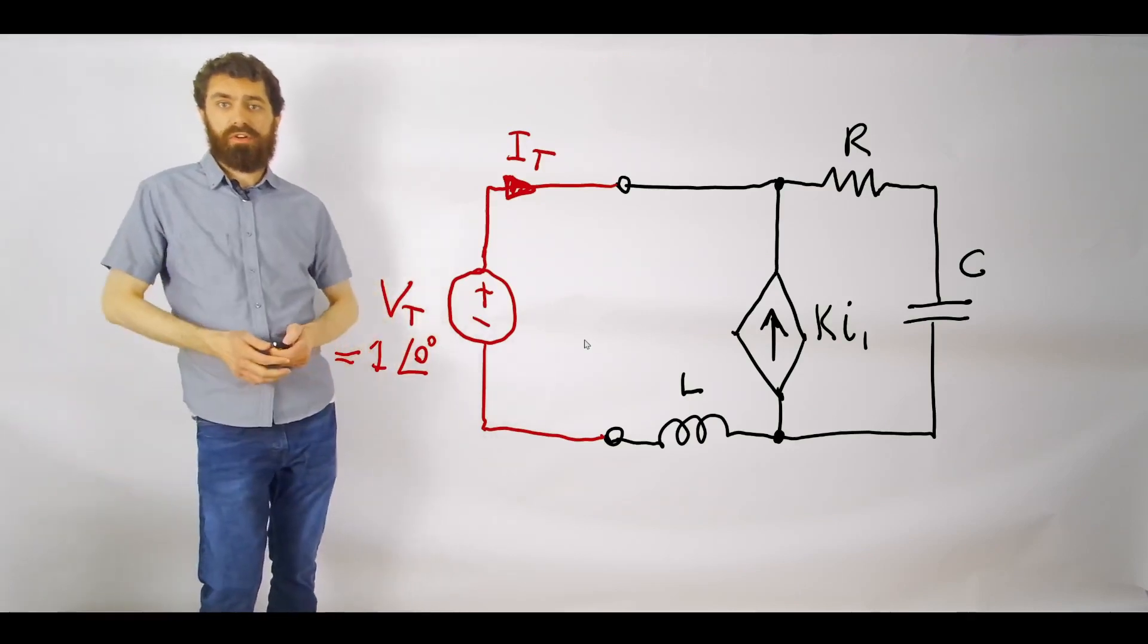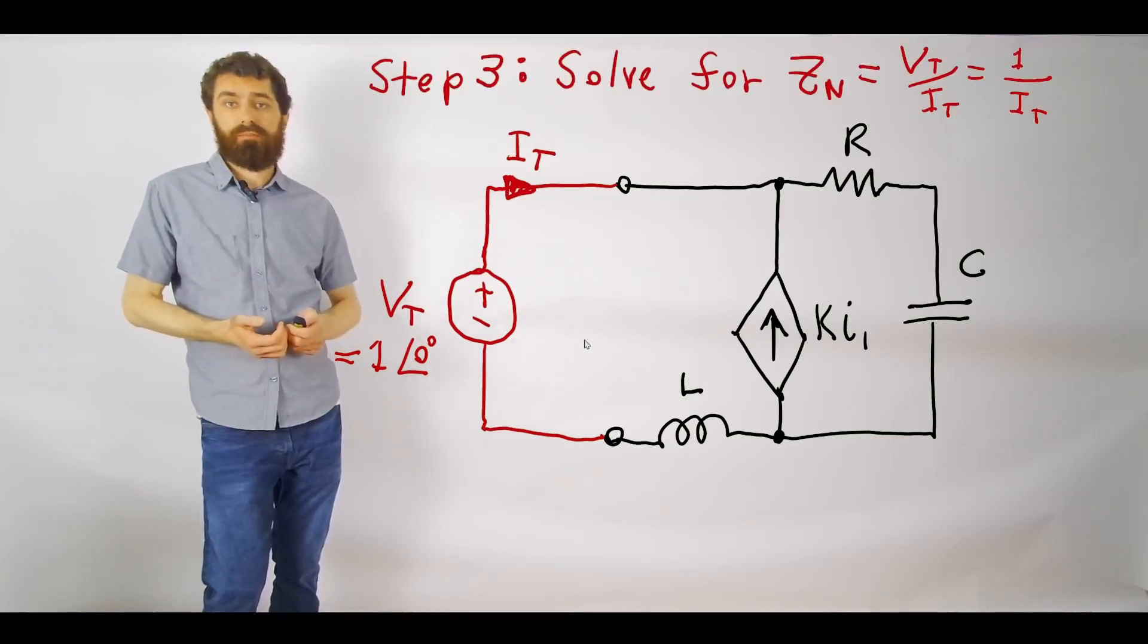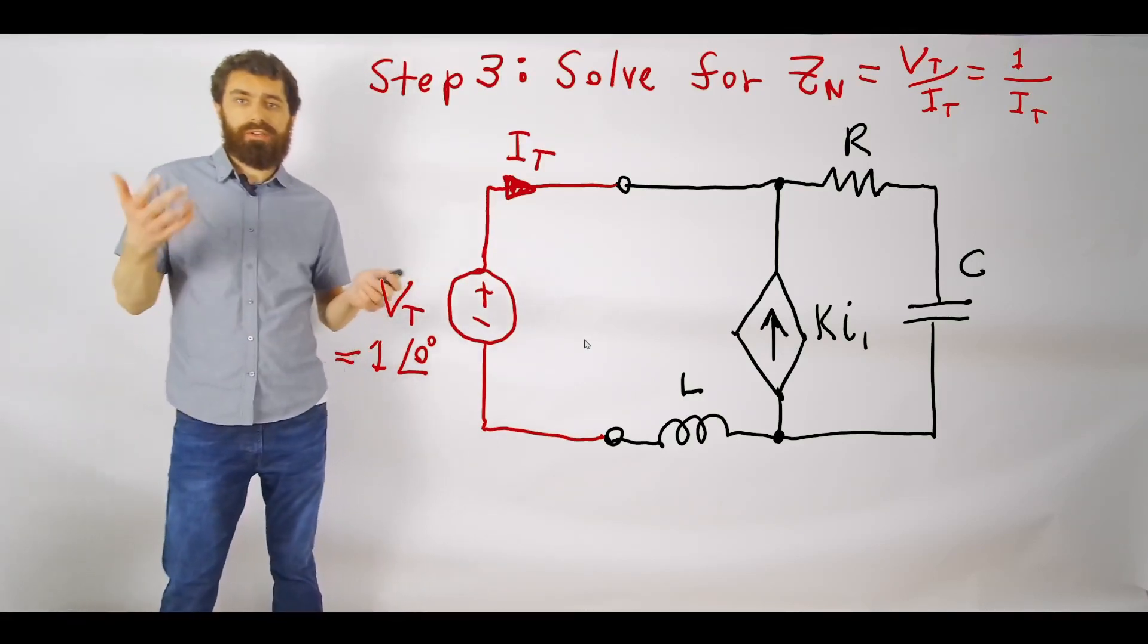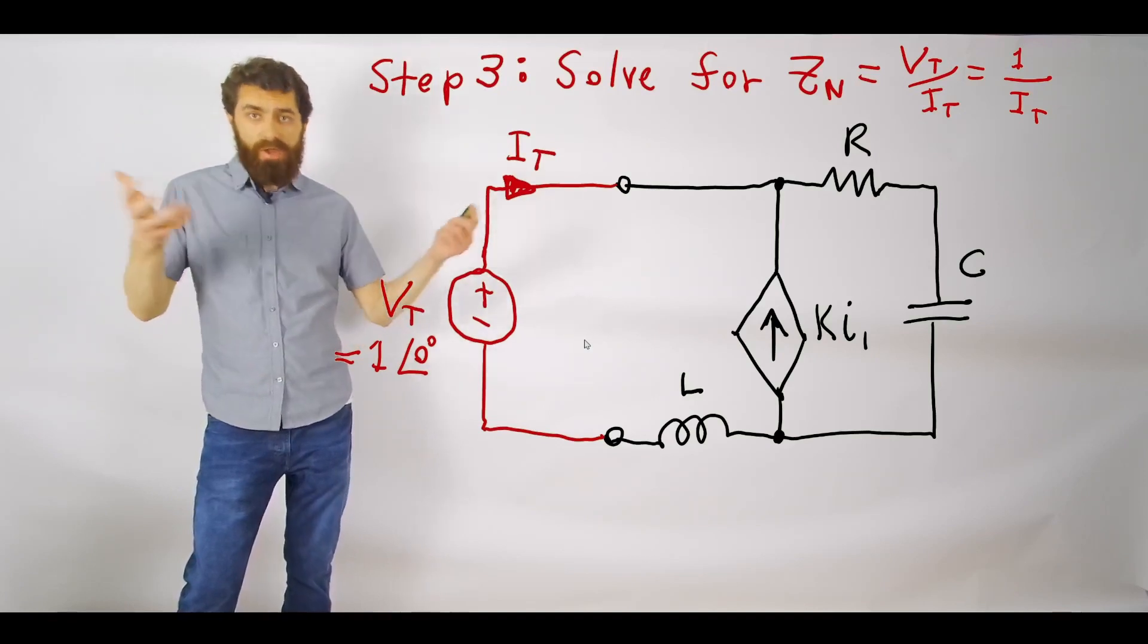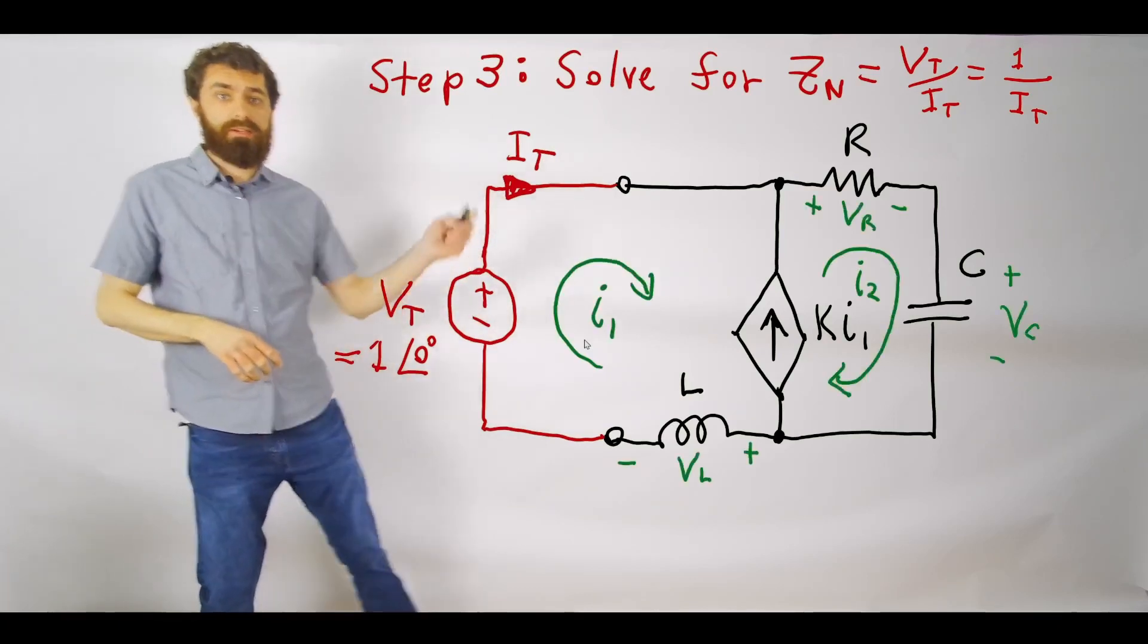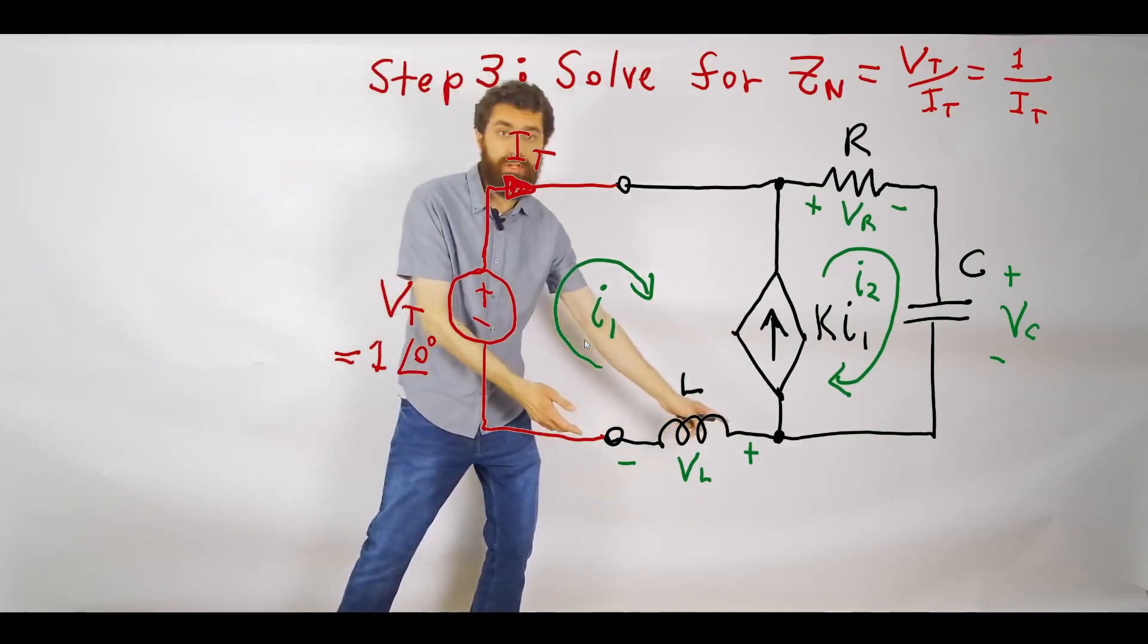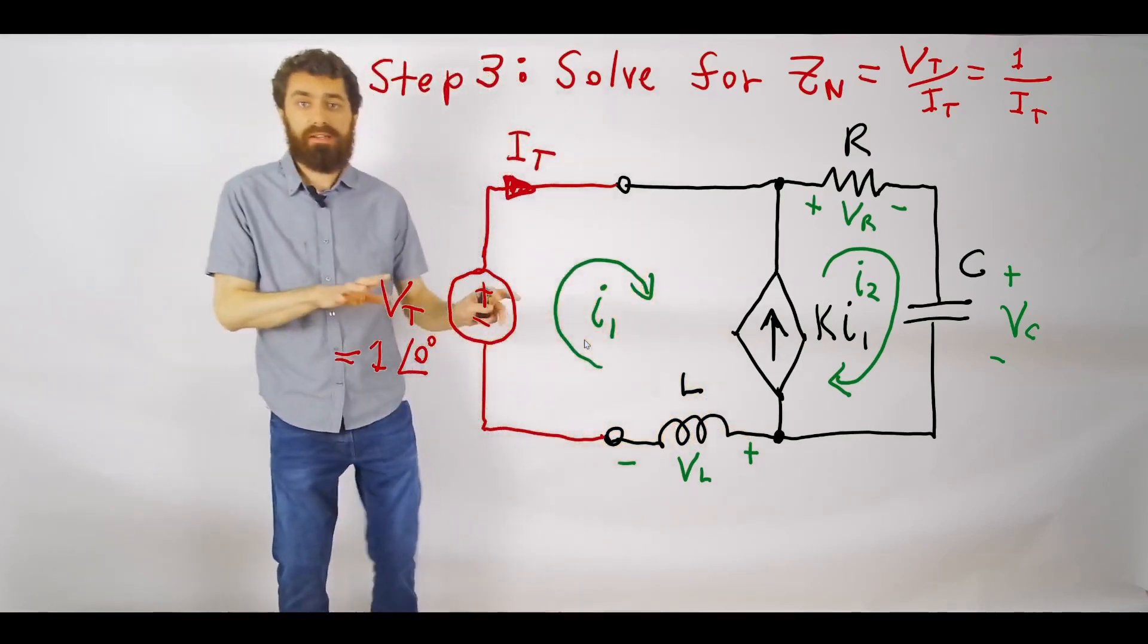Then we just use basic circuit analysis to find the ratio that we are looking for. VT over IT is our impedance we're looking for, and that ends up being one over IT because we just set that equal to one volt. I'm going to use mesh analysis to solve this problem—you certainly can use a number of other techniques. The first step for mesh analysis is to go ahead and define our mesh currents and slap on voltage polarities to all of your components. We've got I1, I2, and then we have VR, VC, and VL. Remember it does not matter what polarity you give these—I could have put plus here and then minus over there for VL. It does not matter; in the end, the math will all work out.